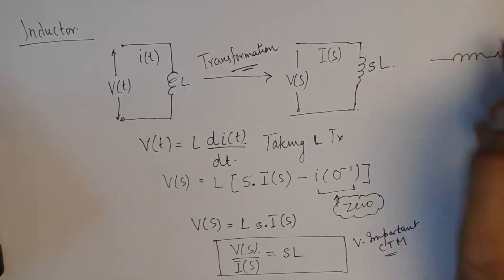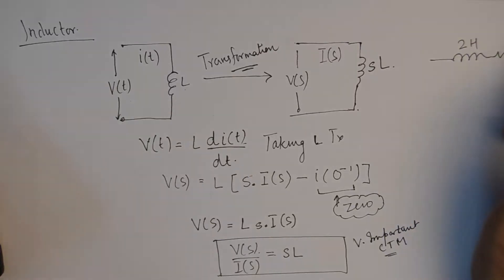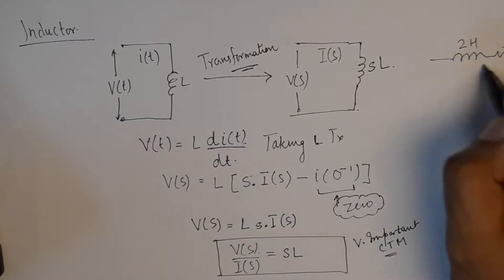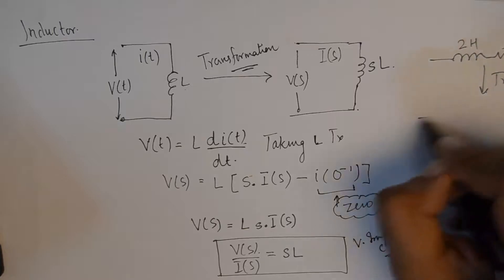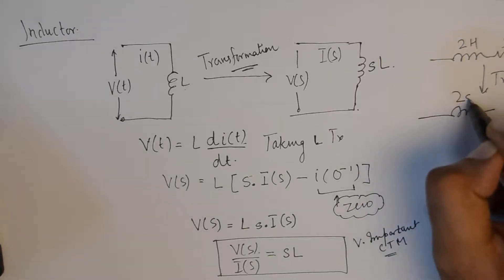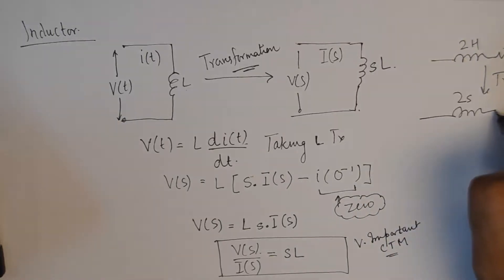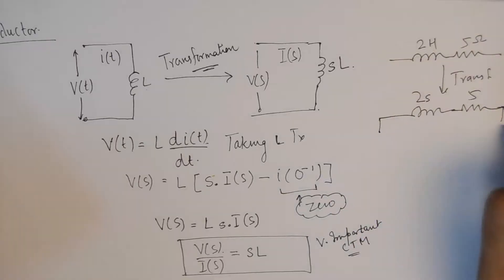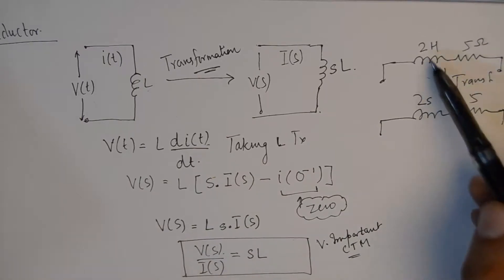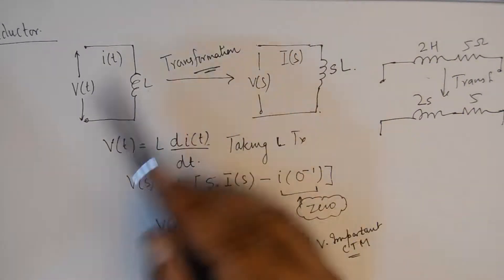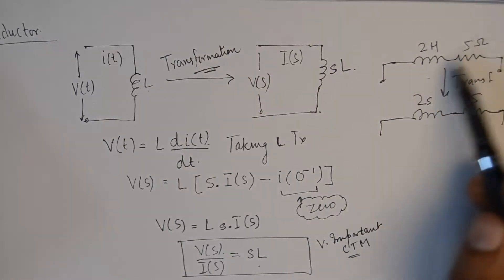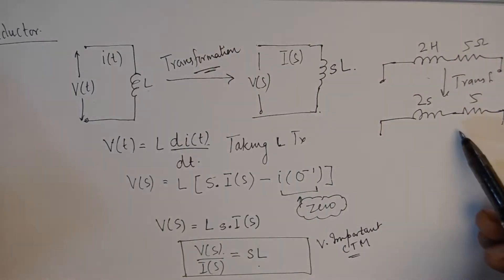For example, if you have a network where a series arm has a 2 Henry inductance and a 5 ohm resistor, and you want to transform this to s-domain, this will simply become 2s and this will remain 5. You can see a direct implementation of this transformation applied onto one branch of this network.